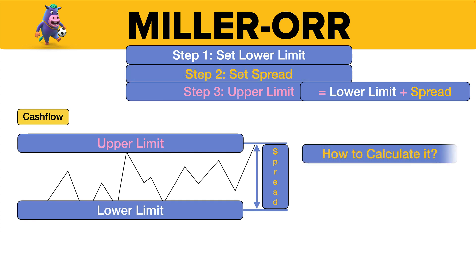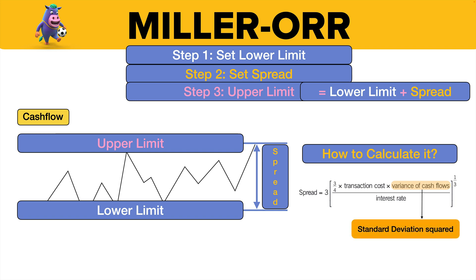This is how you calculate it — it's given in the exam. A couple of things to point out: for the variance of cash flows, you might be given a standard deviation — if so, just square it. The interest rate should be a daily interest rate shown as a percentage, so there should be lots of zeros on it.